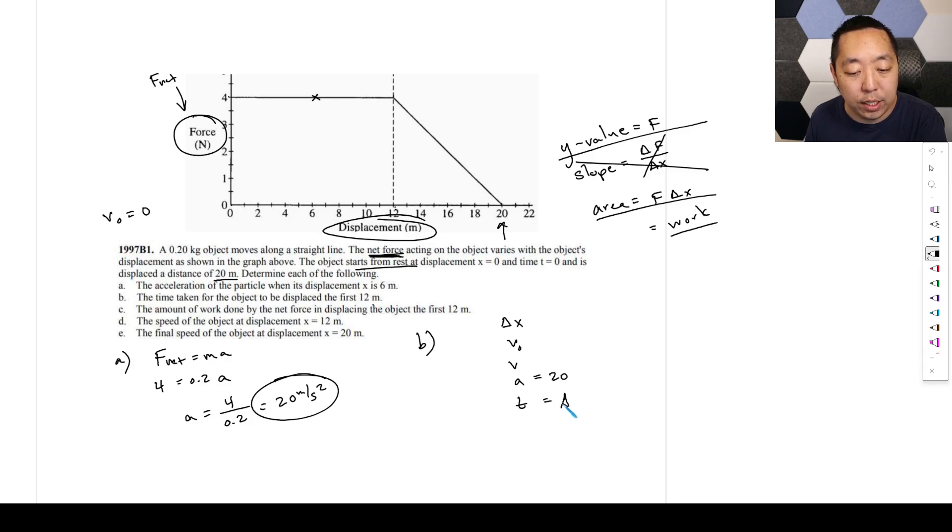The acceleration we know is 20. The time we would like to know, we know it starts at rest. We're displacing the first 12 meters. We have three pieces of information. We're going to use this kinematic equation to solve it. So 12 equals 0, because the initial velocity was 0, 1/2 times 20 times t squared, which is 10t squared equals 12. So 12 divided by 10, take the square root, would equal t. We're going to do square root of 12 divided by 10, and that's going to give us 1.1 seconds.